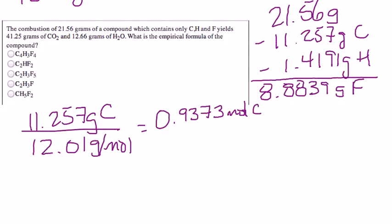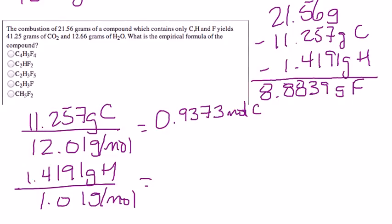And the 1.4191 grams of hydrogen divided by 1.01 grams per mole of the hydrogen leaves us with 1.4050 moles of hydrogen.